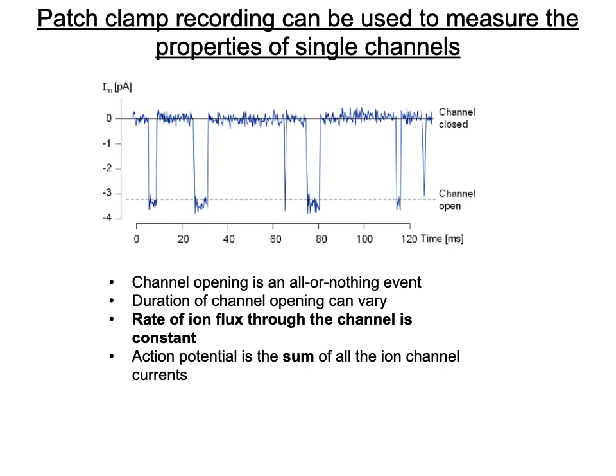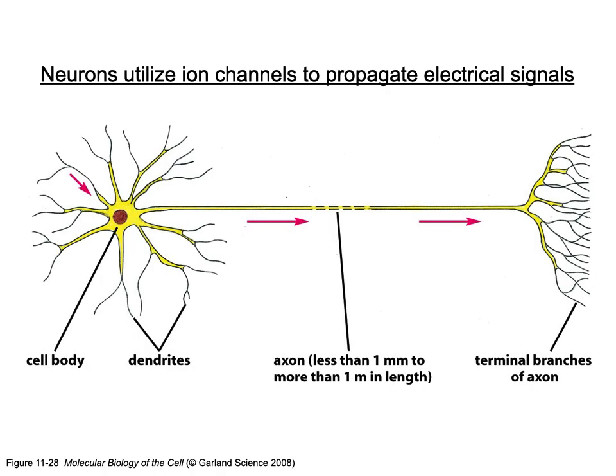An action potential is the sum of all ion channels — patch clamp measures a single channel, while an action potential reflects a collection of channels generating a membrane potential. Neurons have a cell body and dendrites that receive input signals, and an axon — ranging from one millimeter to one meter — where the action potential is generated and propagated. Organisms like squid have extremely long axons.